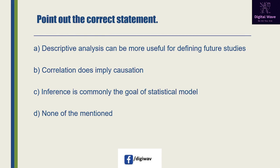Next question: point out the correct statement. Option A is 'descriptive analysis can be more useful for defining future studies', option B is 'correlation does imply causation', option C is 'inference is commonly the goal of a statistical model', and the last option is none of the mentioned. The right answer will be B, because inference depends heavily on the sampling scheme.